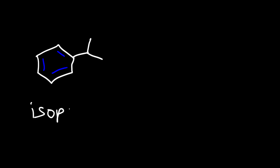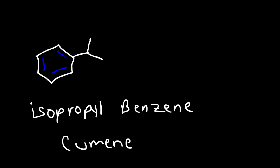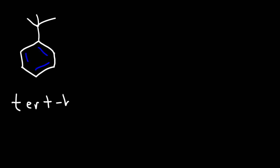What about a benzene ring with an isopropyl group? We can call this isopropylbenzene, but it also has a common name — cumene. And if we have a tert-butyl group attached to a benzene ring, this is going to be called tert-butylbenzene.